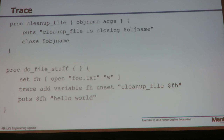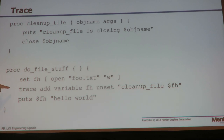How do you get around this? One of the canonical things is that trace will do everything. Trace will follow the things you need and tell you when it goes away, and then you can get rid of it. So you can create a little cleanup proc, open your file, set the trace, and write to it. There's no close at the end, but the close gets called because of the trace. That works pretty well, but it has some problems too.